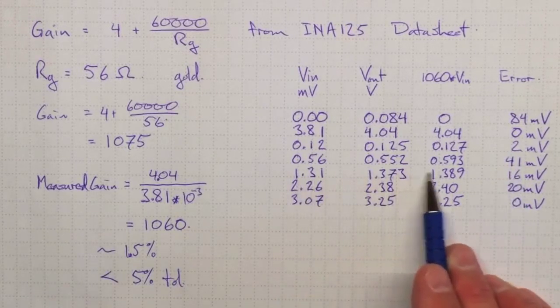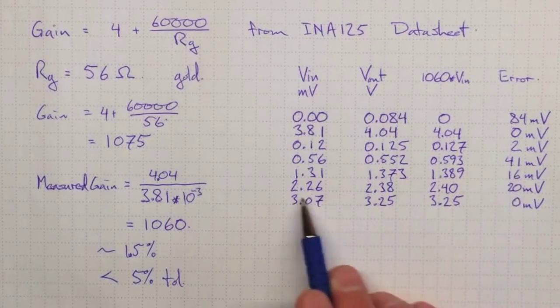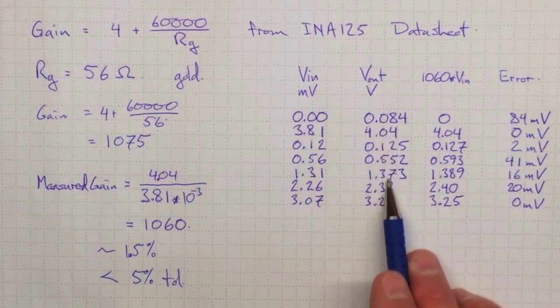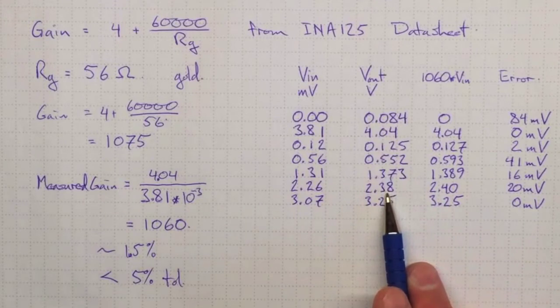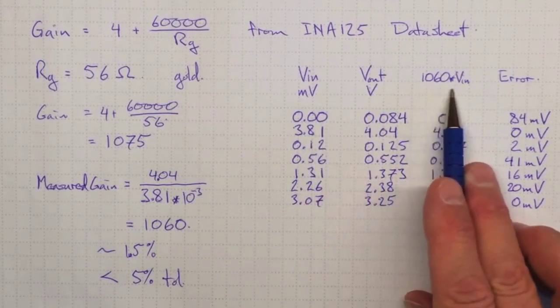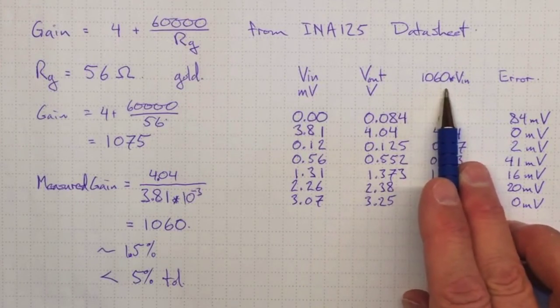1.3. We're within 16 millivolts. And so on, all the way up. So we're within the accuracy of measurement on our output voltage and our input voltage. So I've got a fairly high degree of confidence in this gain of 1,060.